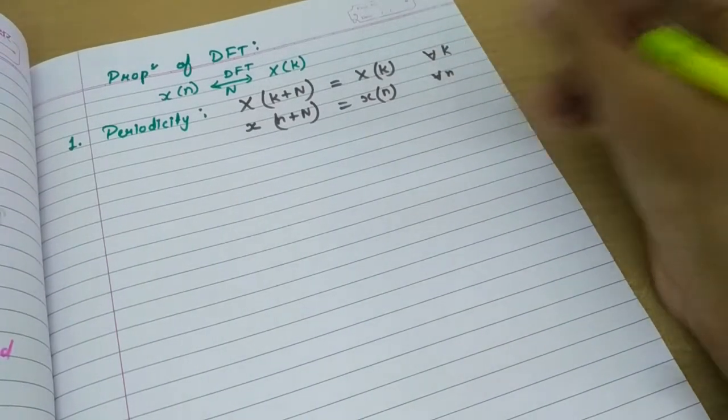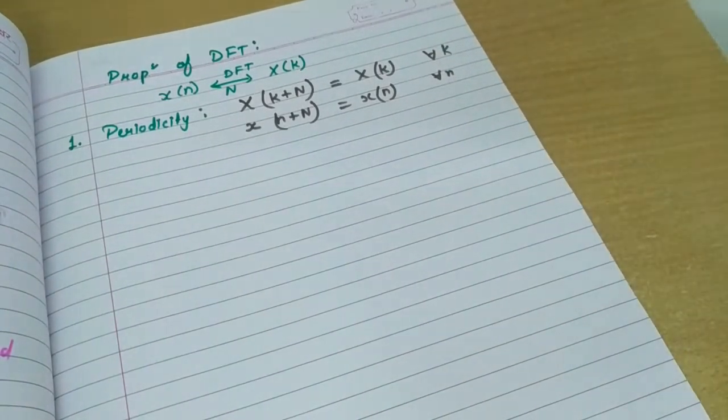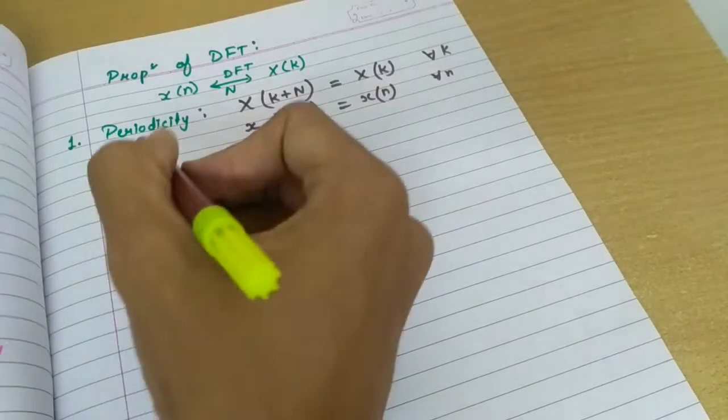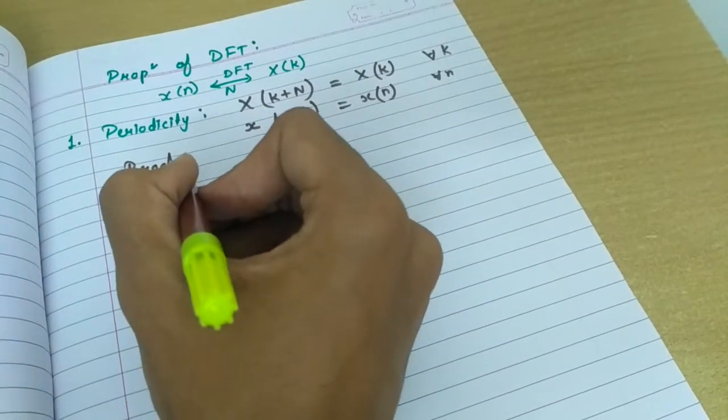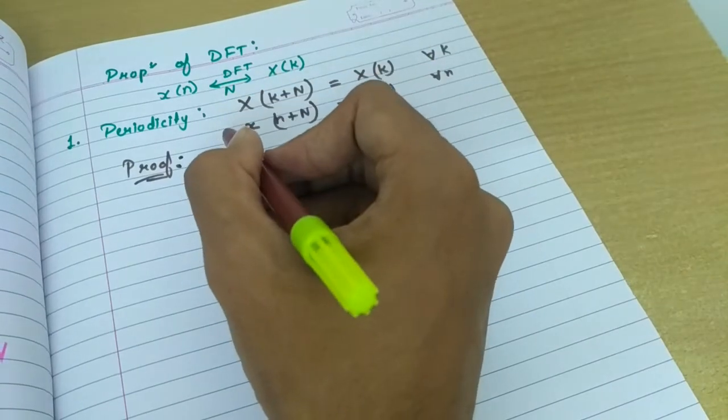Okay, in their specified range that is 0 to n minus 1. So, proof. It is very simple. So, I am moving a little bit quick.